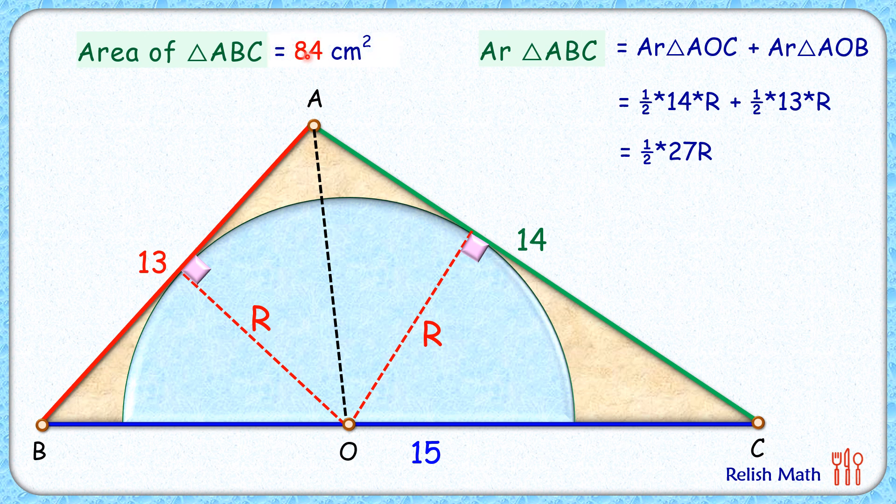Now if we see, area of triangle ABC is also 84 centimeter square and it's also half of 27r. Equating these two and solving, we'll get r as 6.22 centimeters, and that's our answer.